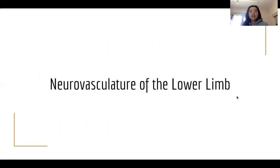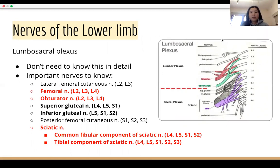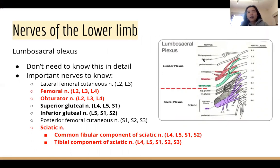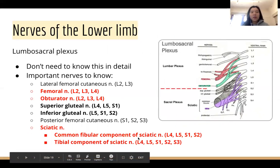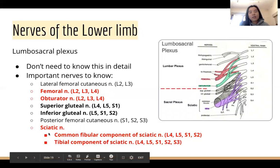Now for the neurovasculature. All the nerves come from the lumbar sacral plexus — it's complicated compared to the brachial plexus, so you don't need to know it in as much detail. You don't need to know all the roots and every branch. The main nerves you should definitely know the course of are the femoral, obturator, and branches of the sciatic nerve.